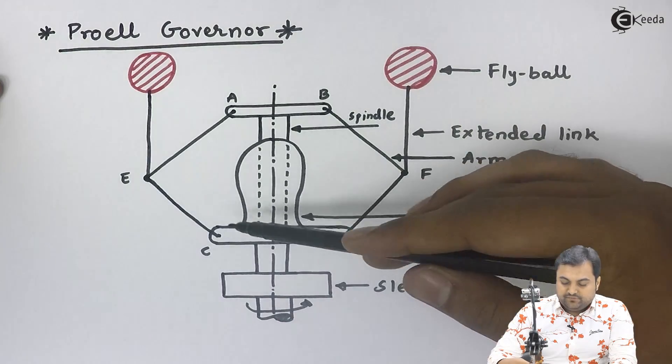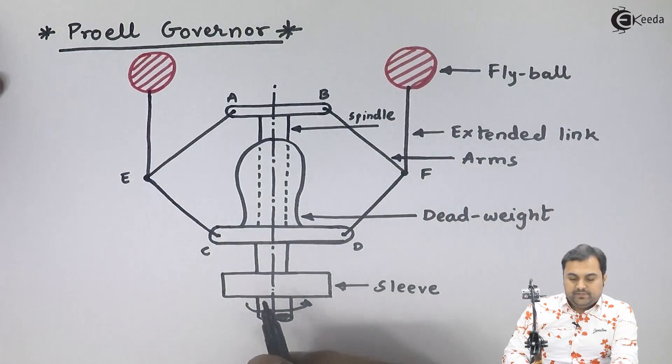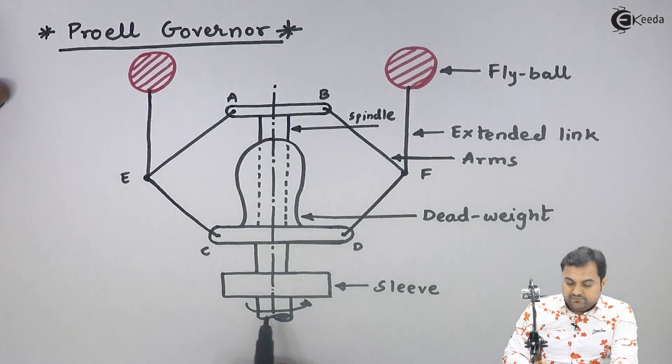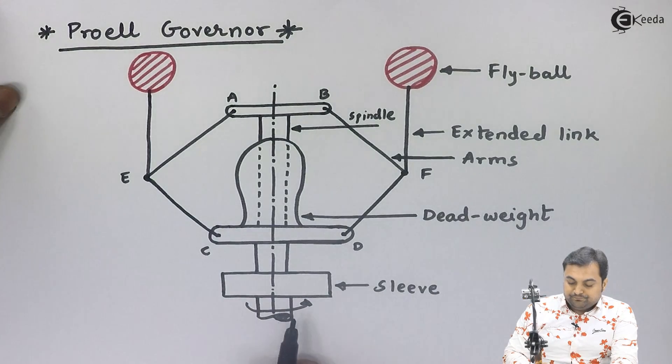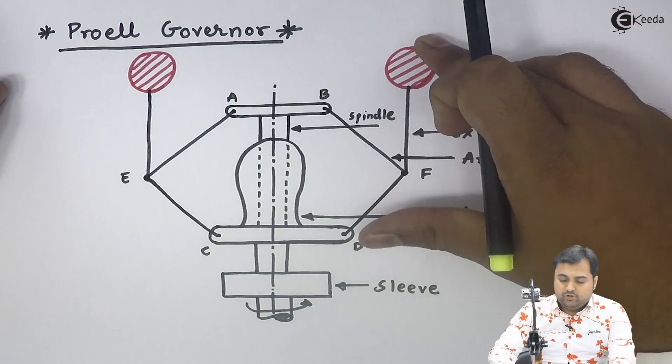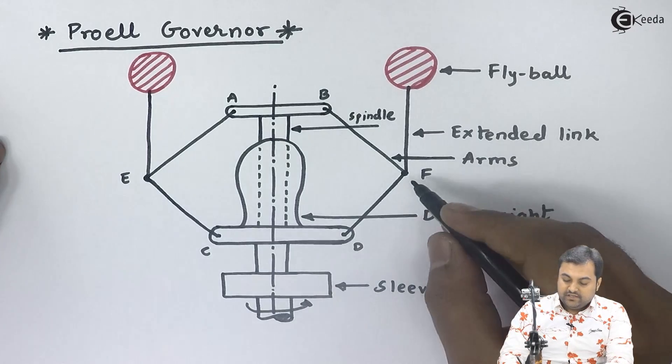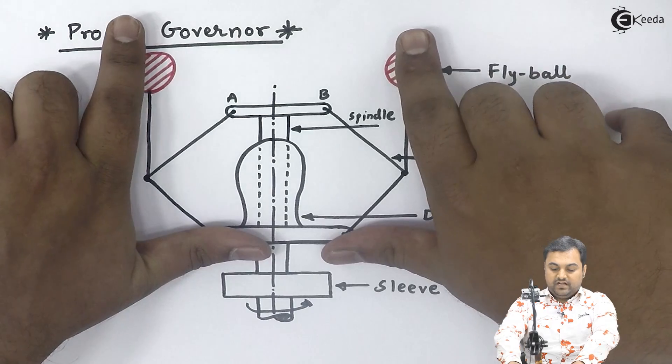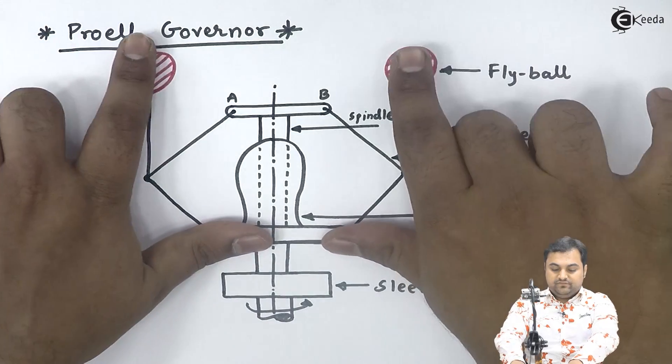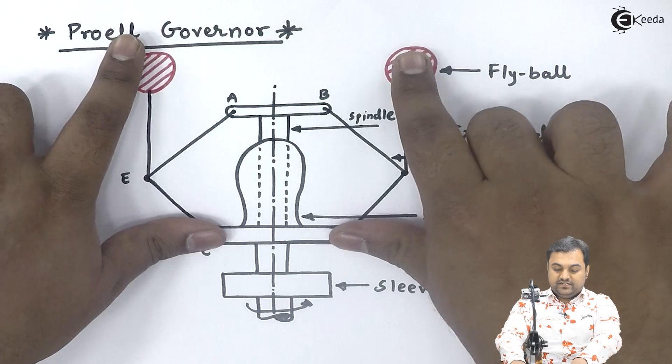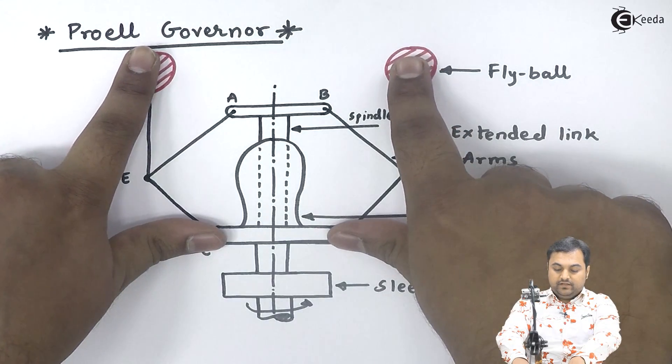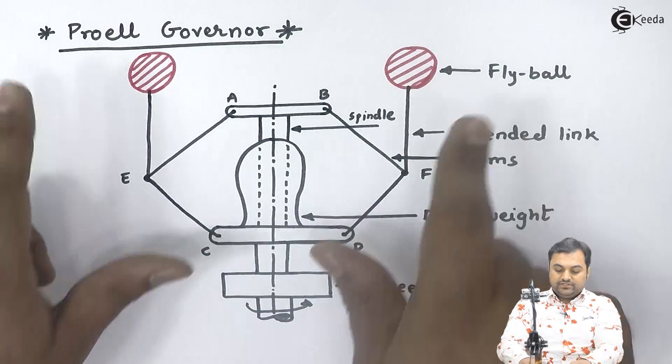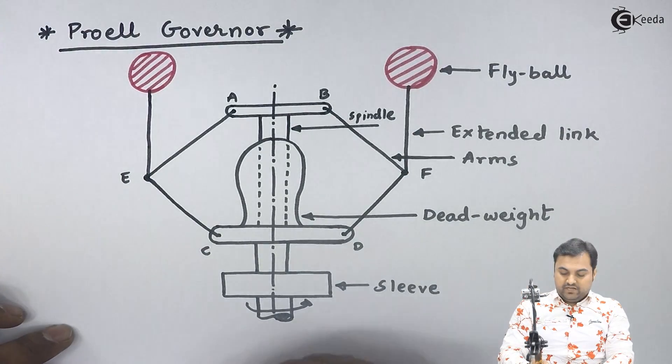The working principle of the governor remains the same, only differences are in the construction of the parts. When the spindle of the governor rotates at a very high speed, the fly balls try to move outwards. When the fly balls are moving outwards, the sleeve moves upwards.